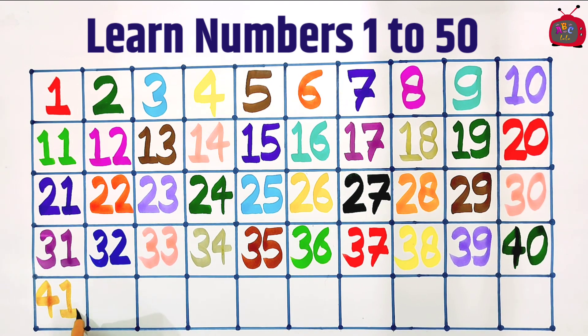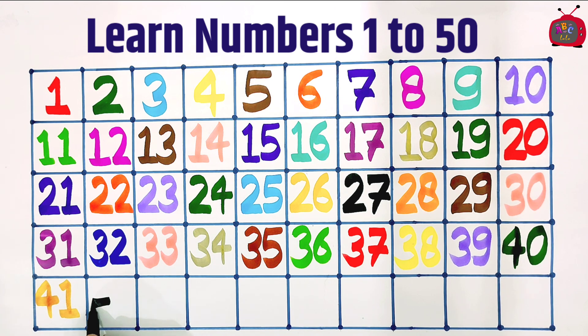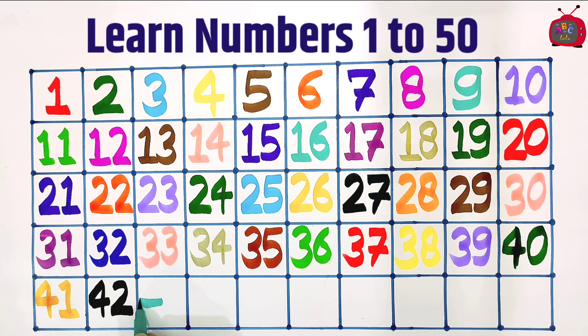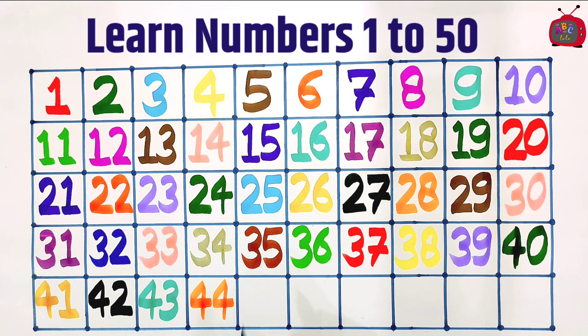Four, one: forty-one. Four, two: forty-two. Four, three: forty-three. Four, four: forty-four. Four, five: forty-five.